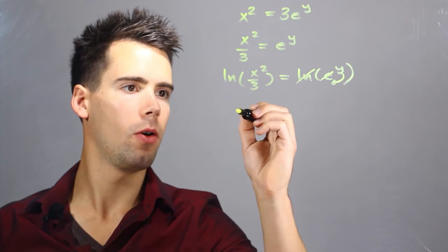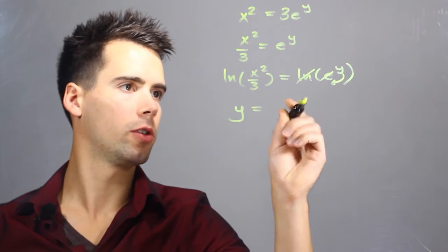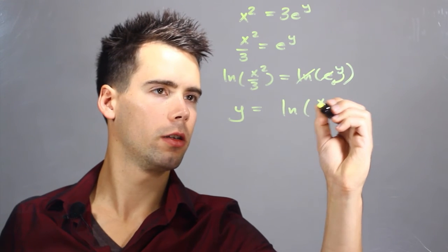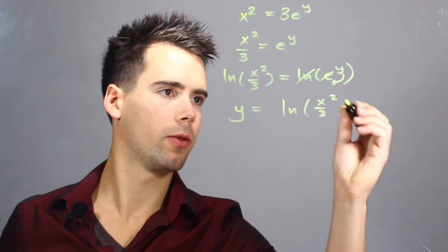So now we have y, which is our right hand side, I flipped them, is equal to the natural log of x squared divided by 3.